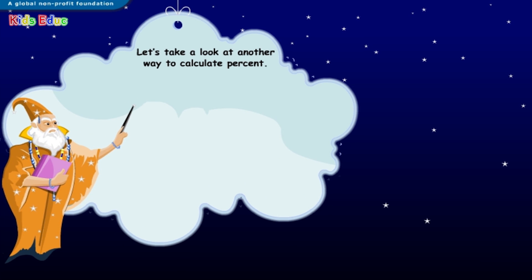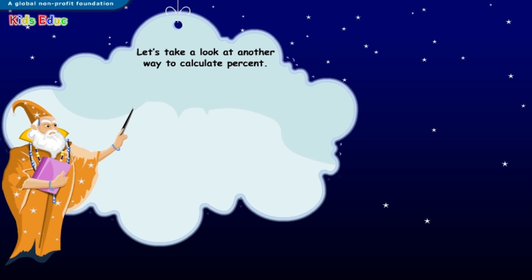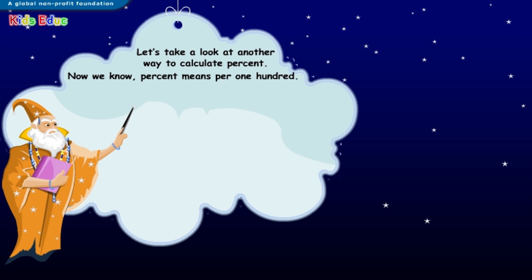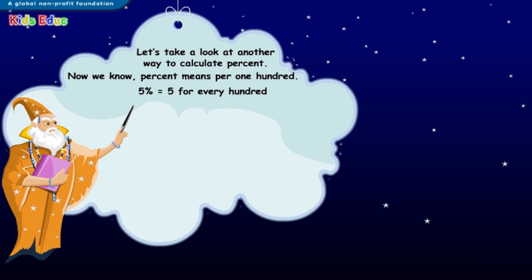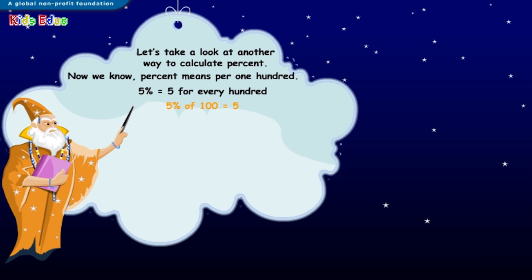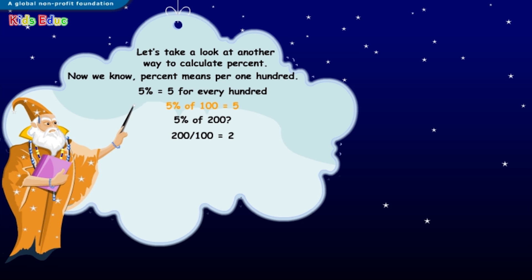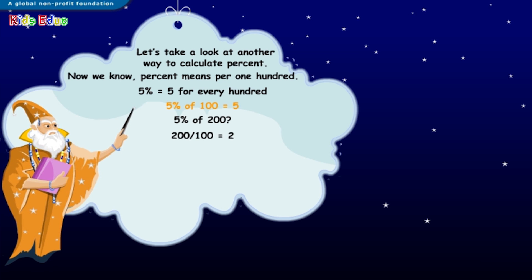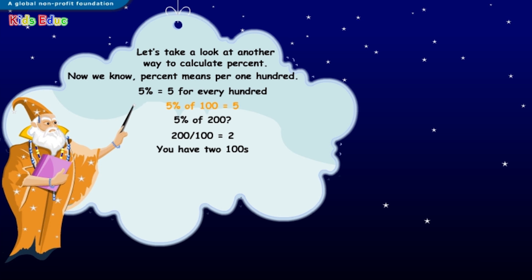Let's take a look at another way to calculate percent. We know percent means per one hundred. Therefore, five percent would mean five for every one hundred. So, if you have to calculate five percent of one hundred, the answer is five. Similarly, to calculate five percent of two hundred, divide two hundred by one hundred, and you get two. This means you have two one-hundredths.